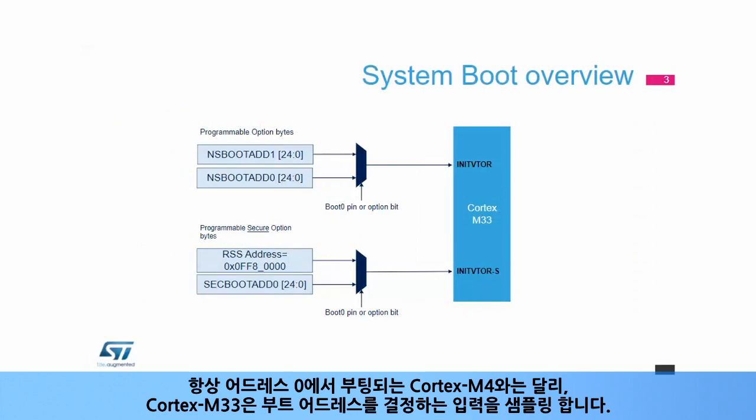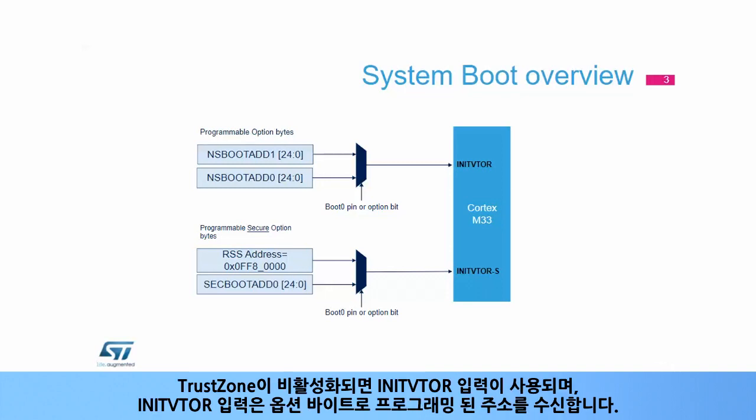Unlike the Cortex-M4, which always boots at address 0, the Cortex-M33 samples inputs that determine the boot address. When TrustZone is disabled, the INIT_VTOR inputs are used, which receives an address programmed in option bytes.